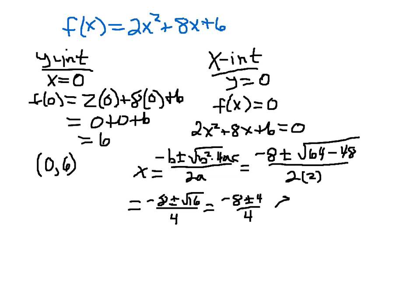And now we're going to have two pieces here. When you add those numbers, when you add minus 8 and 4 and divide it by 4, and when you subtract those numbers. So when you subtract, divide it by 4. So one answer will be minus 4 all over 4, which would be negative 1. And the other one will be minus 12 over 4, which is minus 3.